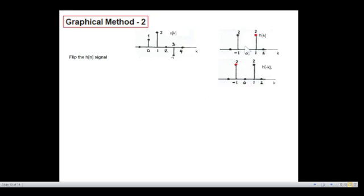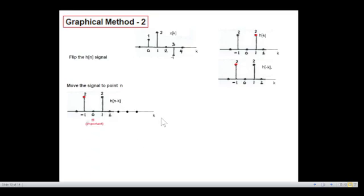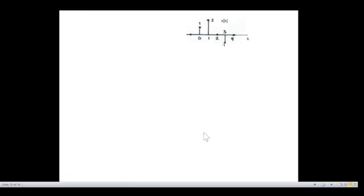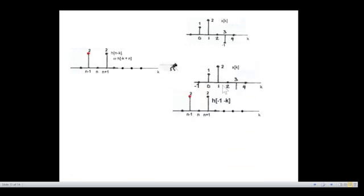A curious mind may ask: what happens if we flip h(k) instead? Let's see. We flip h(k) — I've put a dot here so you can track it — and the dot comes here after flipping. Using the same technique, h(−k) is moved to n, so h(−k) becomes h(n−k). An important point: n should always be placed at position 0 in the scale. With n at 0, this becomes n+1 on one side and n−1 on the other.